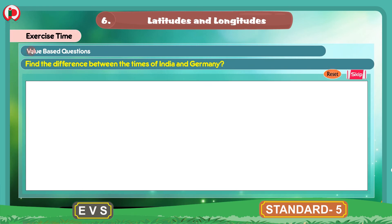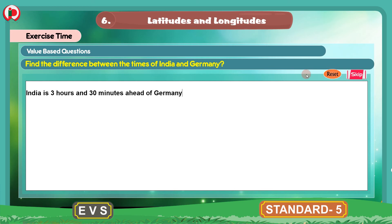The next section is value based questions. The question is: Find the difference between the times of India and Germany. The time difference between India and Germany is that India is 3 hours and 30 minutes ahead of Germany. This is the time difference between India and Germany. Now we will move to the next section.